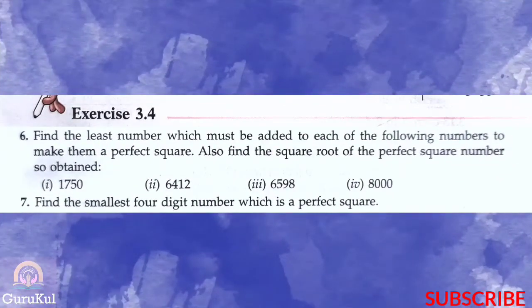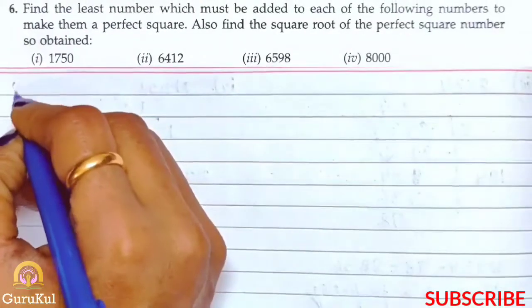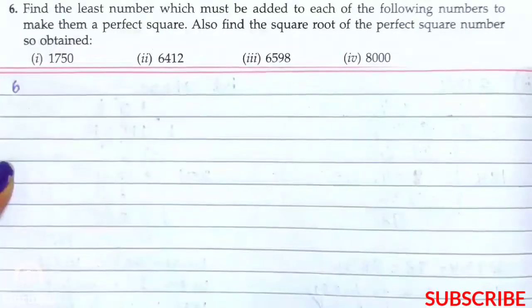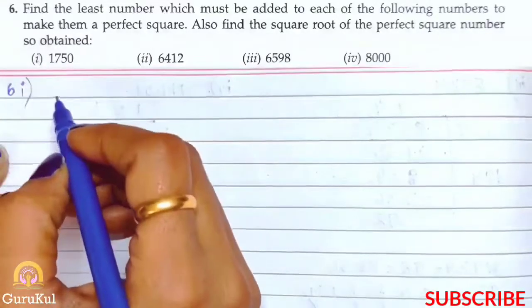Today I am going to start with part 5 of exercise 3.4. Now question number 6 says that we need to find the least number which must be added to each of the following numbers to make them a perfect square. That means jo bhi number diya hai usme kya add karne se wo number ek perfect square ban jayega. Also find the square root of the perfect square so obtained.